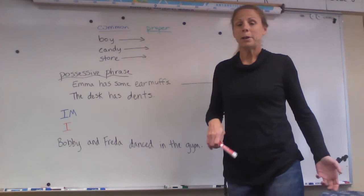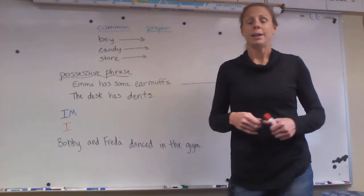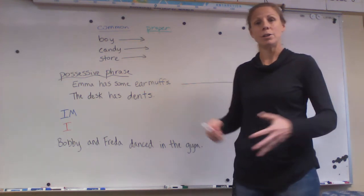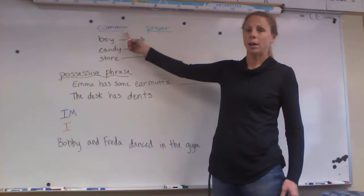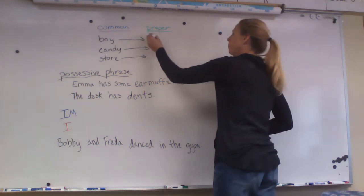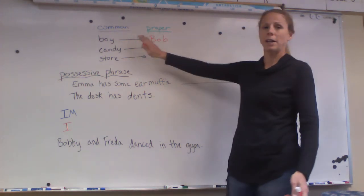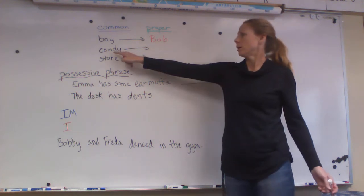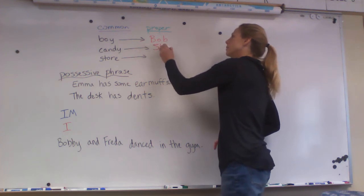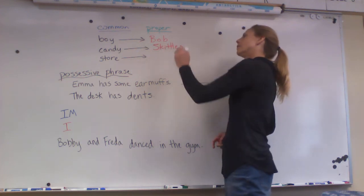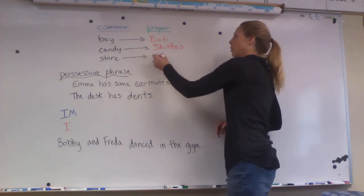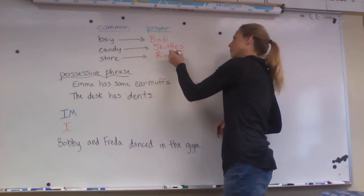When we talk about common and proper nouns, remember the common is the noun that's not going to be capitalized — it's just an everyday word. A common noun could be 'boy,' but a proper noun might be 'Bob,' the specific name of a boy, and it's capitalized. Common: candy. Proper could be Skittle. Store is common. Proper could be Ray.